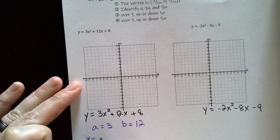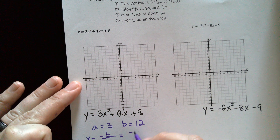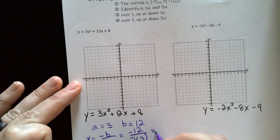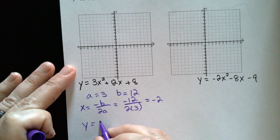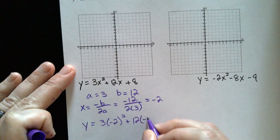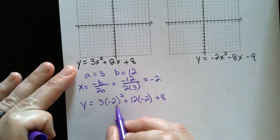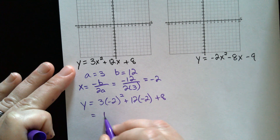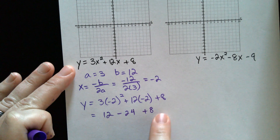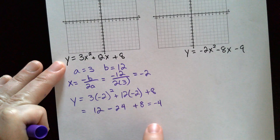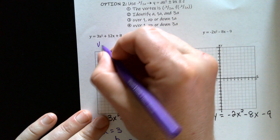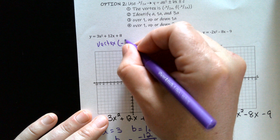So x is equal to negative b over two a, which is negative 12 over two times three — that's six. So x is equal to negative 12 divided by six, which would be negative two. That's the x portion of my vertex. To find the y portion, I just plug that number in: y is equal to three times negative two squared plus 12 times negative two plus eight. This gets squared first — that's four times three is 12 — then negative 24, plus eight. That'd be 20 minus 24, which is negative four. So our vertex is negative two comma negative four.